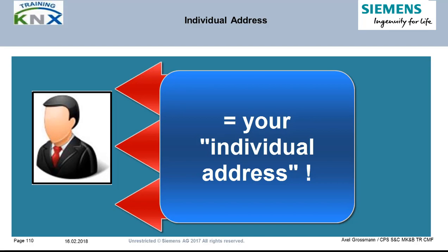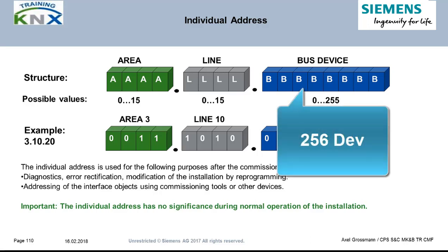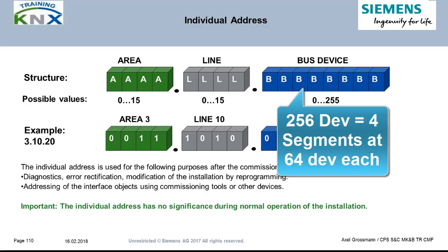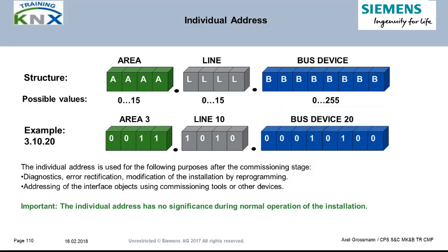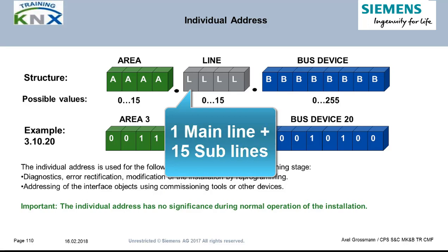The bus device's address in a line is 8-bit long, enabling 256 different numbers — this also explains the limitation to 4 segments of 64 devices each within a line. Next, the line address is described by 4 bits, so 16 lines can be created. One of them — numbered 0 — is the main line.